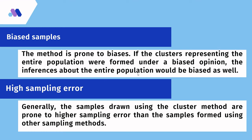Biased samples: the method corresponds to bias if the clusters representing the entire population were formed under a biased opinion. This means influence about the entire population will be wrong and represent biased sampling results. If samples drawn under the cluster method are wrong, then a higher sampling error yields as compared to other sampling methods.